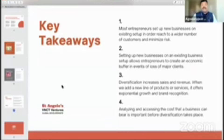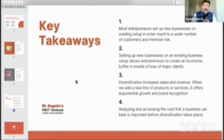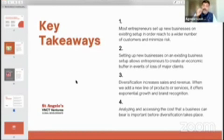So what are the key takeaways? One: most entrepreneurs set up new businesses on existing setup in order to reach a wider number of customers and minimize risk. Point number two: setting up new businesses on an existing business setup allows entrepreneurs to create an economic buffer in events of loss of major clients, to bear up the gestation period, or to experiment with what you're trying to achieve. Point number three: diversification increases sales and revenues — when we add a new line of products or services, it offers exponential growth, brand recognition, and also brand encashment.